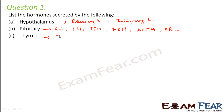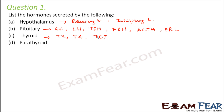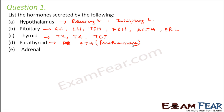Next is the thyroid. The thyroid secretes thyroxin — that is T3 and T4 — and TCT, that is thyrocalcitonin. The parathyroid secretes parathormone, which is often written as PTH. It's worth writing the complete name — parathormone — because not many people are aware of the short forms of many hormones.